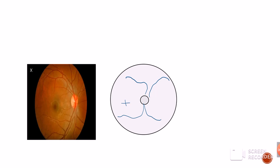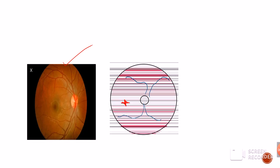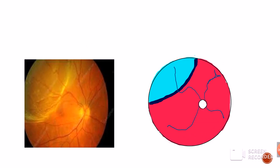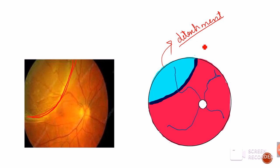Let us see how we represent a normal retina and a retina with detachment on the fundus diagram. In a normal retina, there is no detachment — the optic disc and attached macula are shown. An attached macula is always represented in red as a plus sign, and the attached retina is drawn in red. In contrast, a detached retina is represented in blue color. Wherever retinal detachment is present, it is drawn in blue; attached retina is in red.